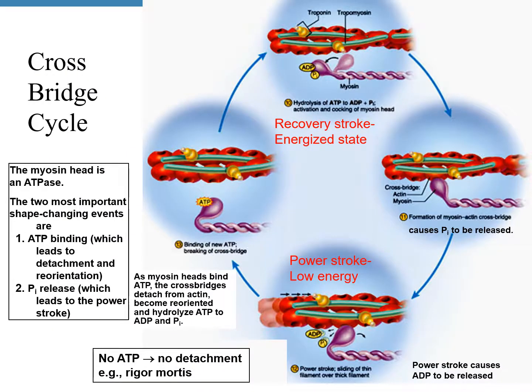The cycle starts when a molecule of ATP binds to the myosin head, detaching it from the actin. Since myosin has ATPase enzyme, it breaks down ATP into ADP and inorganic phosphate, releasing a lot of energy. The ADP and inorganic phosphate remain bound to the myosin head. Because of the energy released, the myosin head changes shape and forms a cross bridge with actin — that means it binds to actin again. Then the ADP and inorganic phosphate are released.